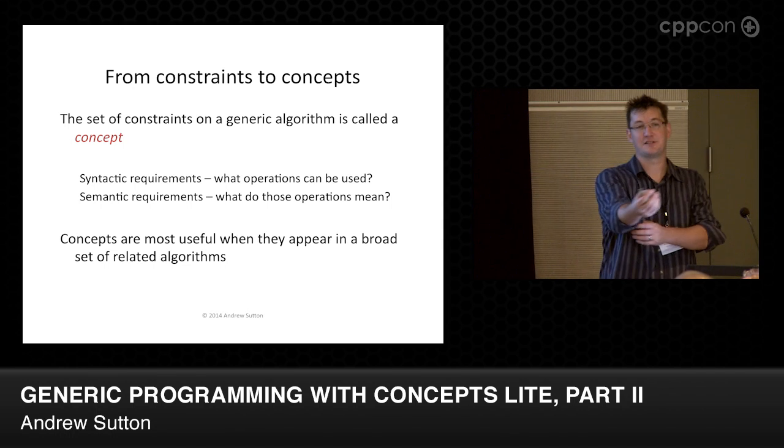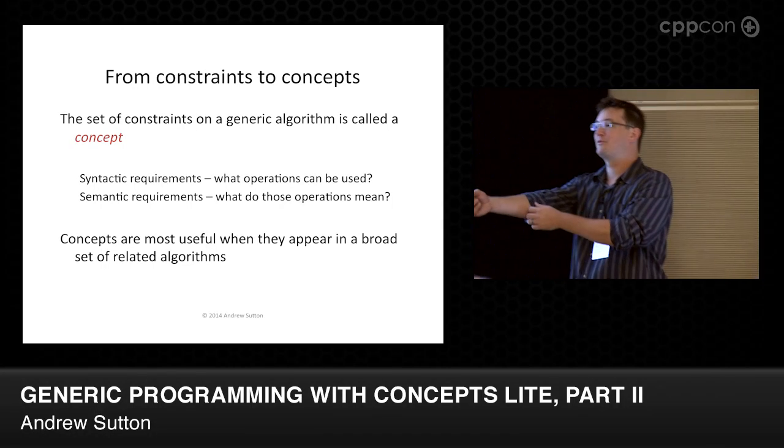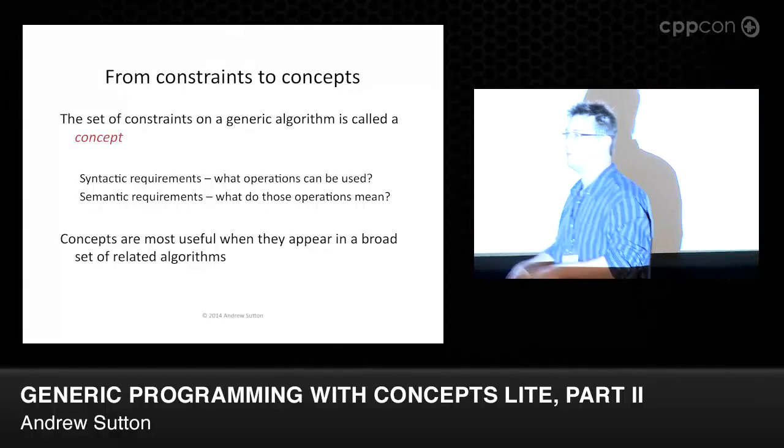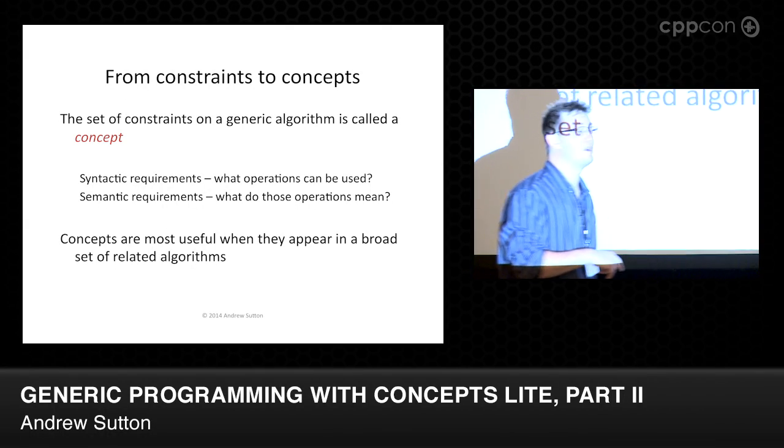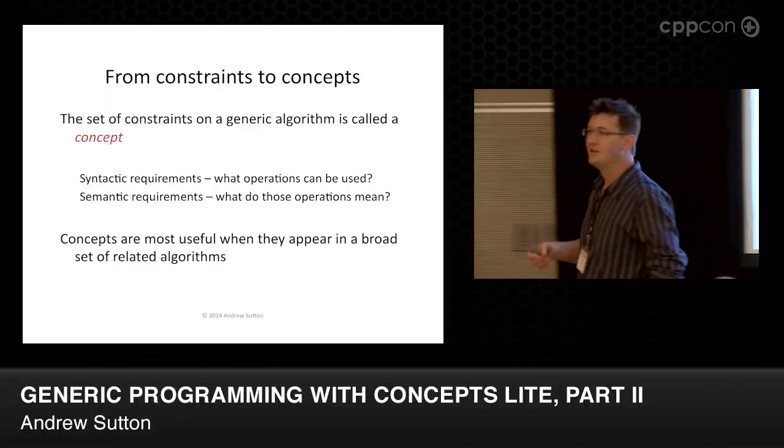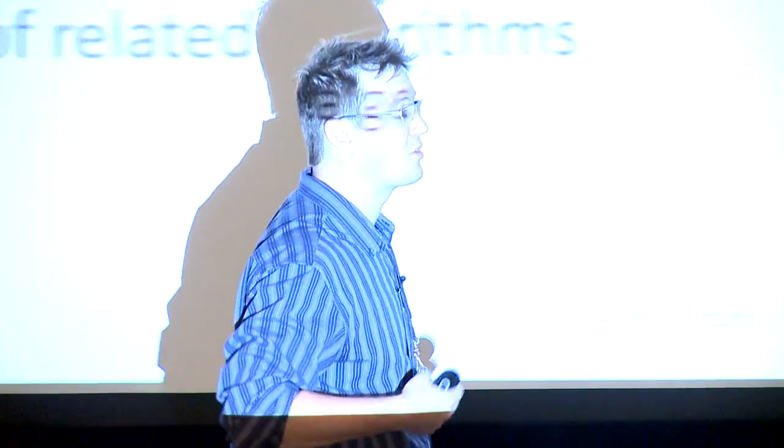Concepts are most useful when they occur in a lot of different algorithms at the same time. If you have a bunch of algorithms that share common syntactic requirements and common behaviors, then you really want a concept that describes what those requirements actually are — what that abstraction actually is. We can certainly define one-off concepts; it's not a big deal. Like: I have a template, I should probably have a concept. Except that one-to-one mapping kind of leads to having a million concepts, which seems kind of skewed.